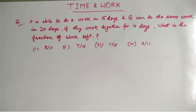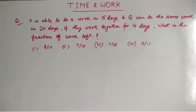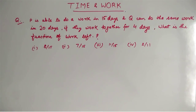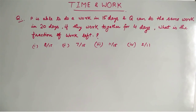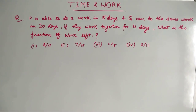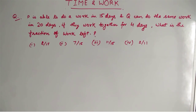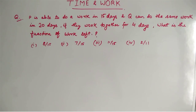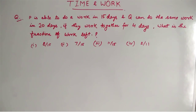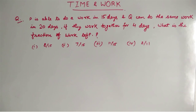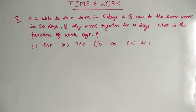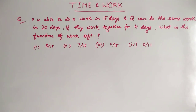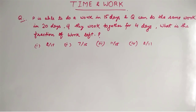Here is one example that I am going to solve with our trick, so that we minimize the calculation part. The question is: P is able to do a work in 15 days and Q can do the same work in 20 days. If they work together for 4 days, what is the fraction of work left? You will find questions like this in your SSC exam, so let's see how we can solve this to minimize the equations and the fractional part.